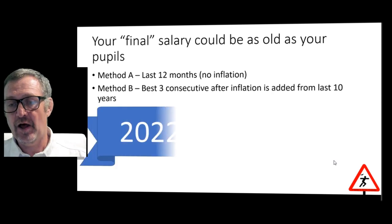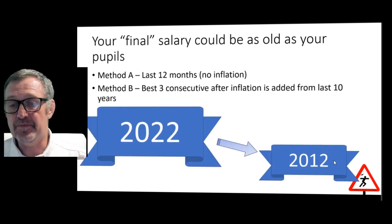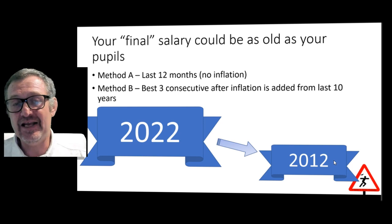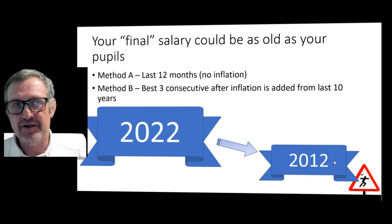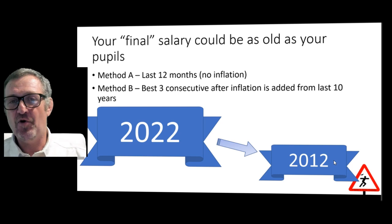The other method, Method B, uses your salaries from the last 10 years. And crucially, each of those salaries has inflation added to it before it is used to work out your final salary in this method. So you could have a salary from 2012 being used in this calculation. That is a salary before many children in primary school were actually born.